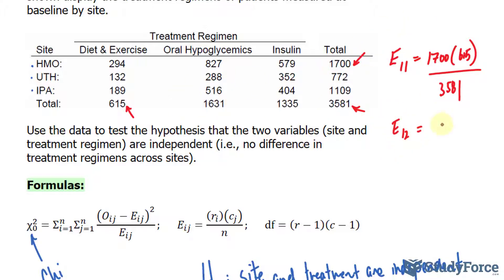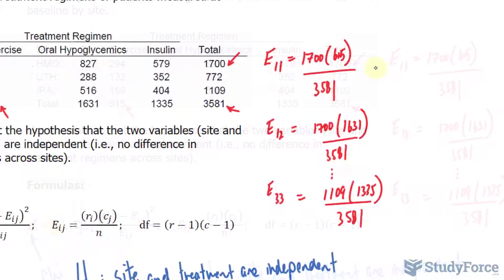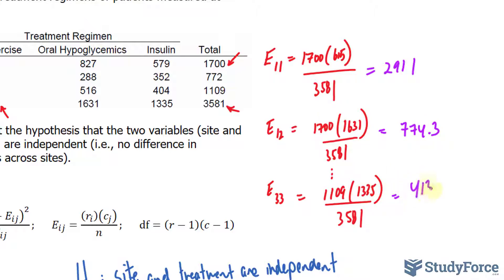One and two would be seventeen hundred times sixteen thirty-one divided by three thousand five hundred eighty-one, and one more for good measure. Actually, let's just do row three and three. We would have one thousand one hundred nine times one thousand three hundred and thirty-five divided by three thousand five hundred eighty-one. If we go ahead and calculate this, you should end up with two hundred ninety-one point one. For this one, seven hundred seventy-four point three. And for this very last one, four hundred and thirteen point four.